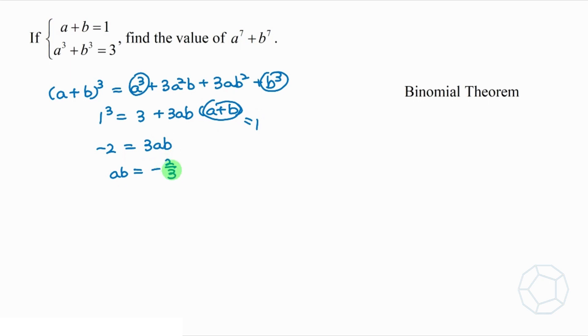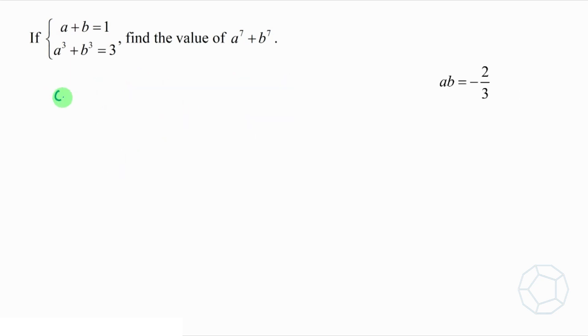Next, we're going to find the sum of squares. Consider bracket a plus b whole square, which is a square plus 2ab plus b square. We put a plus b equals to 1 on the left to get 1 square. And ab equals to negative 2 over 3 on the right.